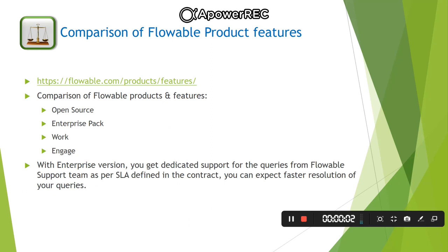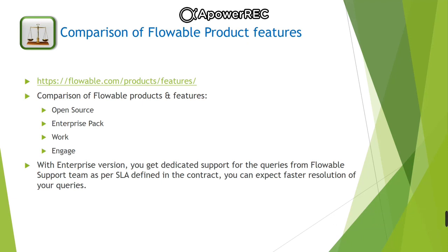Let's discuss Flowable product features and their comparison. Flowable has four products: open source, enterprise pack forked from open source, Flowable Work, and Flowable Engage. The latter three are licensed versions. All details are well documented on the Flowable website at https://flowable.com/products/features, and the link is provided in the video description.